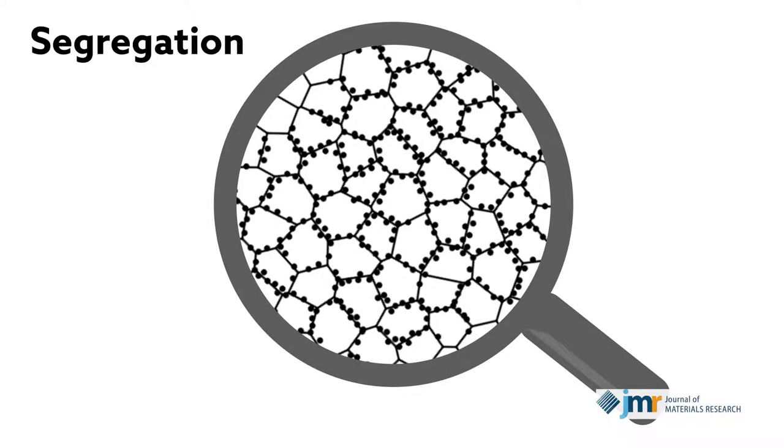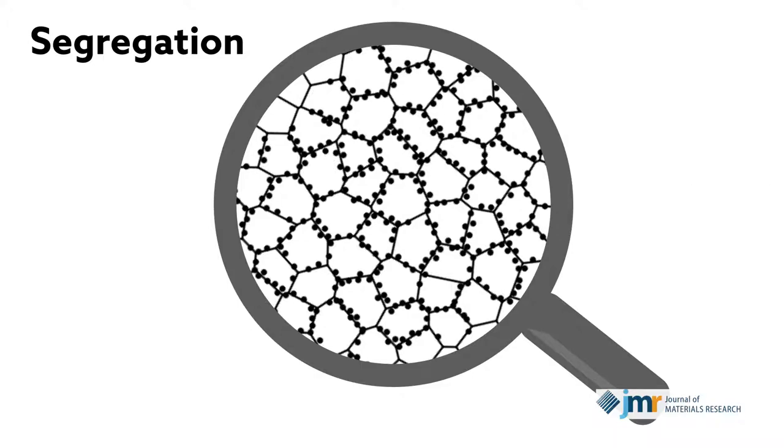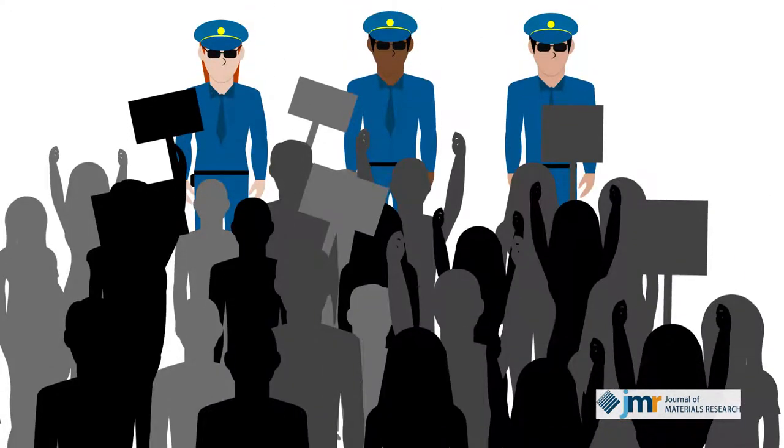As the grains in a metal shrink, the addition of a small amount of an alloying metal segregates or adheres to the boundaries between different grains. Like police officers containing an unruly crowd,